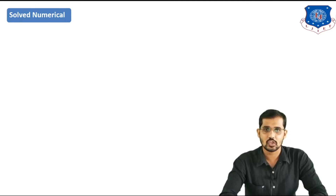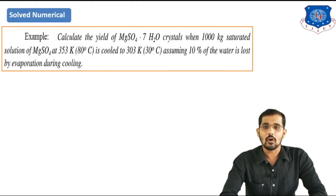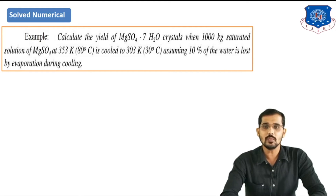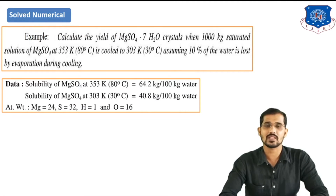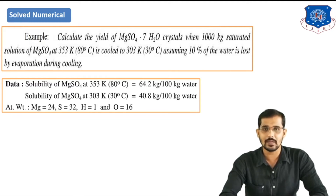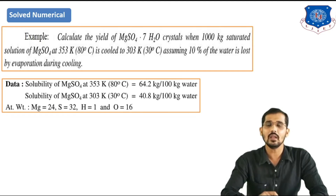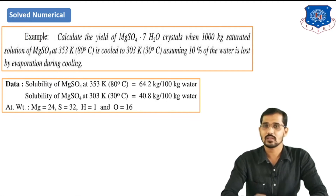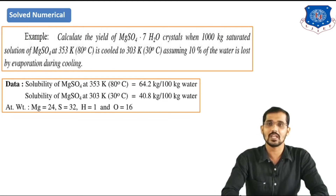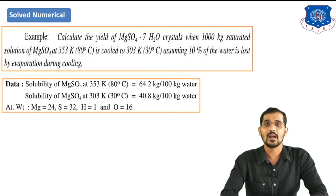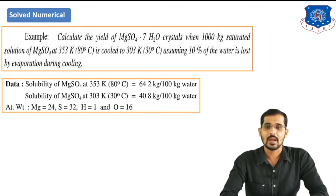We will now solve a numerical problem based on crystallization. Calculate the yield of MgSO4·7H2O crystals when 1000 kg of saturated solution of MgSO4 at 353 K is cooled to 303 K, assuming 10% of the water is lost by evaporation during cooling. Given data: solubility of MgSO4 at 353 K = 64.2 kg per 100 kg water; solubility at 303 K = 40.8 kg per 100 kg water; molecular weights: Mg = 24, S = 32, H = 1, O = 16.